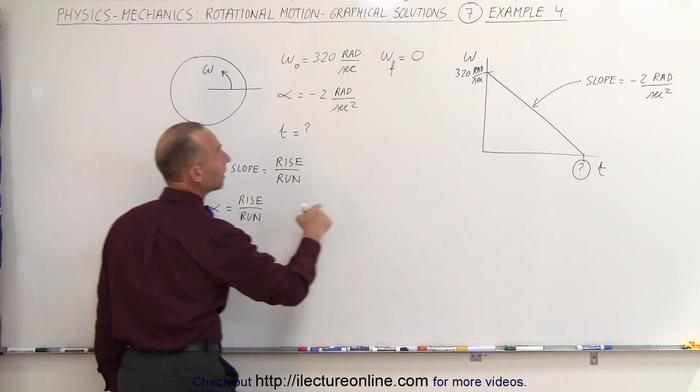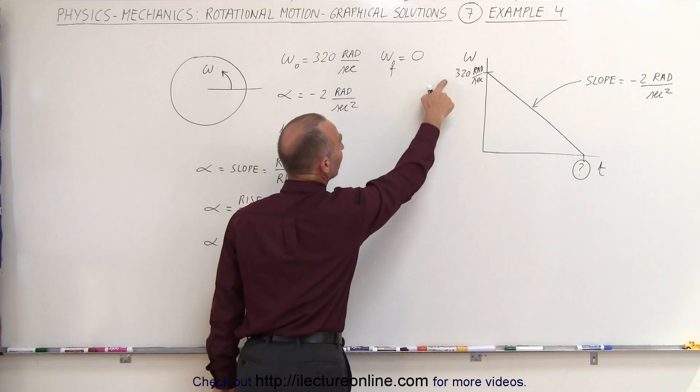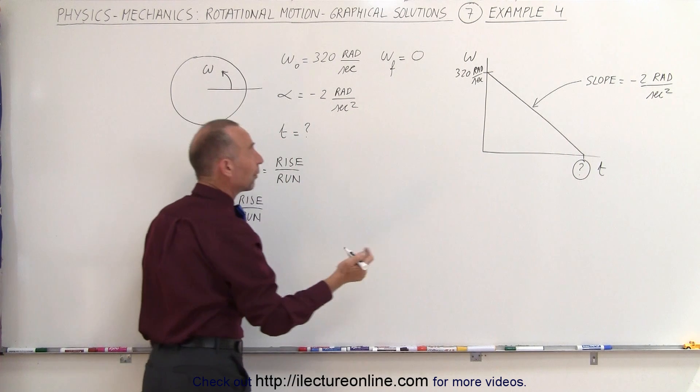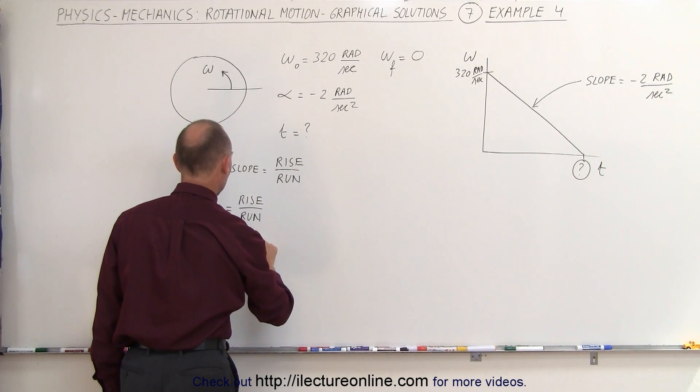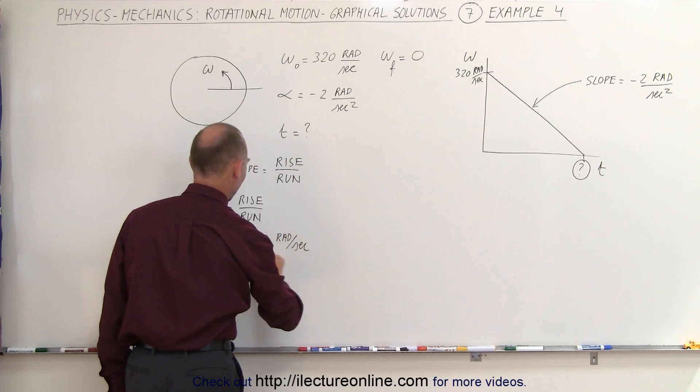now the rise is going to be from 320 down to 0, that's a negative rise, so therefore it's negative 320 radians per second, divided by the time, which is t, that's the unknown.